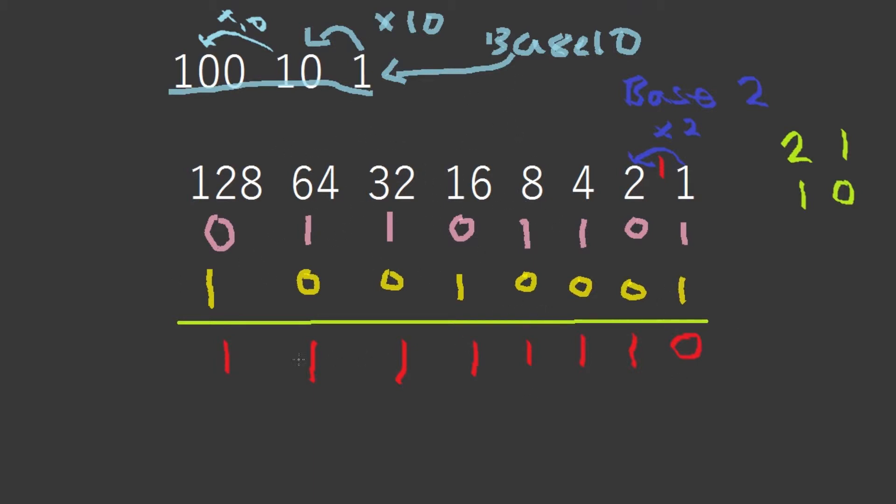So let's check it actually. Let's first convert these two numbers into denary, the base 10 system. So we have 1 sixty-four, we have 1 thirty-two.